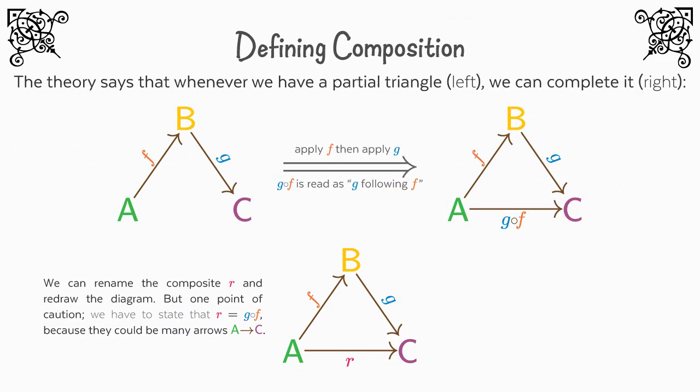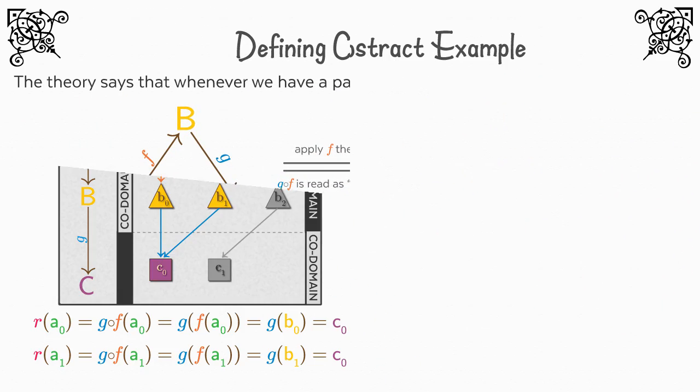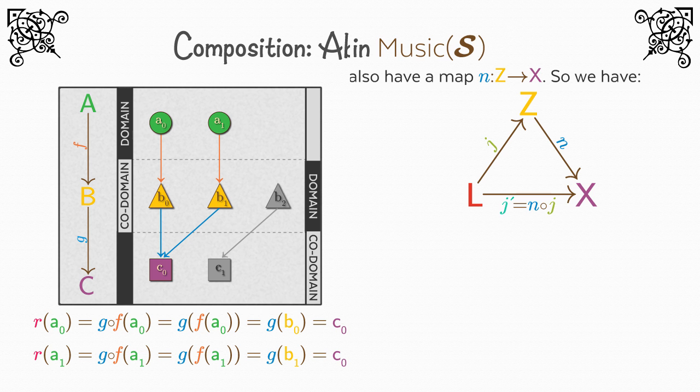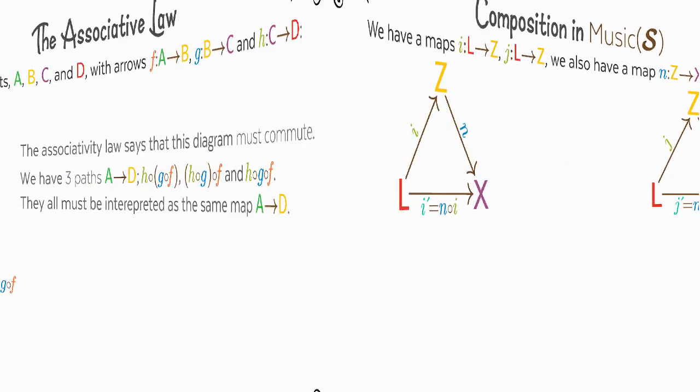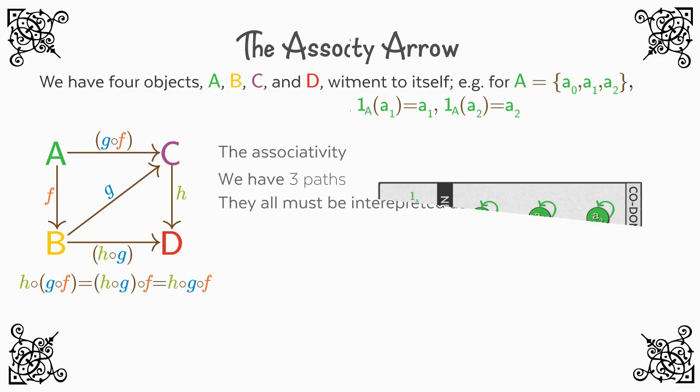In video 3, we will discuss composition in detail, with abstract examples and examples from Music S. The topic of video 4 is the associative law, the identity arrow, and the identity laws.